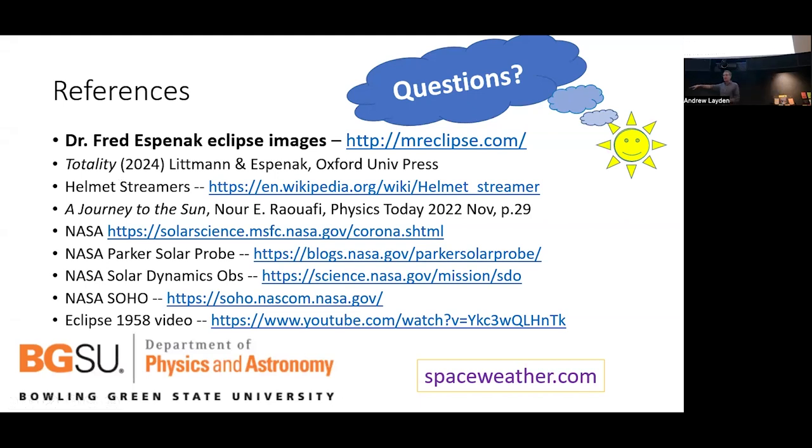I think I'm about at my time limit here, so I'll throw up my references and in particular give my thanks to Fred Espinak and all his beautiful eclipse images. There's a great book called Totality over there. The Totality book is a nice complete description of eclipses and it costs only about 20 bucks. So let me open the floor to questions and thank you very much.